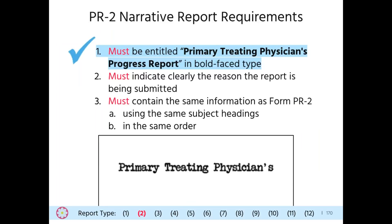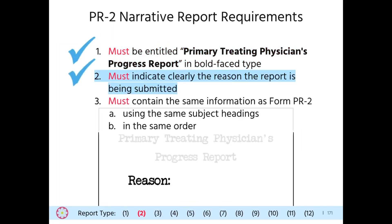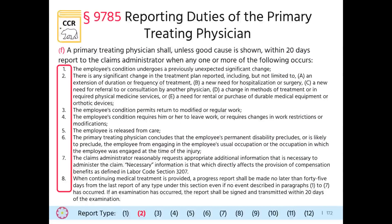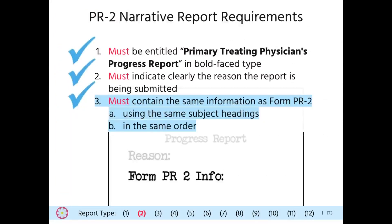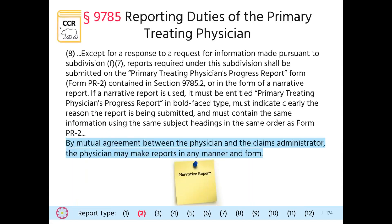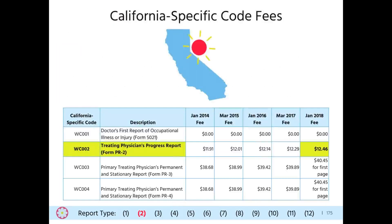The narrative report must be entitled 'Primary Treating Physician's Progress Report' in bold-faced type. It must indicate the reason for submitting the PR-2, specifically the particular occurrence that warranted submission. It must also contain the same information using the same subject headings in the same order as the PR-2 form. Regulation 9785 also allows the claims administrator and physician to mutually agree to make reports in any manner or form. For billing purposes, the PR-2 report is billed using California-specific code WC002. The reimbursement for this report changes annually, but currently the reimbursement is $12.46.